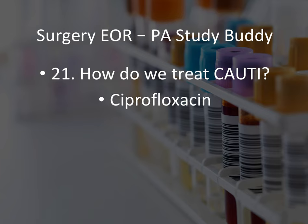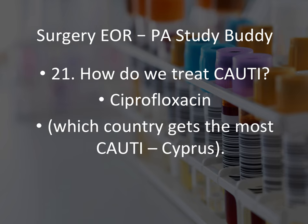How do we treat CAUTI? That would be ciprofloxacin. I always associate CAUTI with Cyprus — Cyprus is like Cipro — and when you're talking about CAUTI, a UTI, I think of Cyprus and I know ciprofloxacin is the answer. Create your own mnemonics and little stories, because these are things I still remember three years after graduating. So: Cyprus, Cipro, CAUTI.